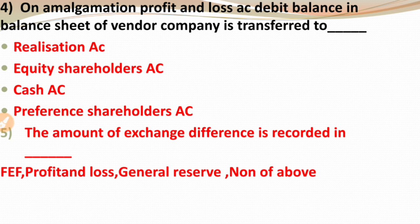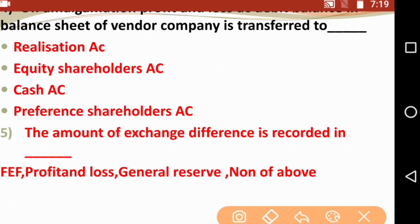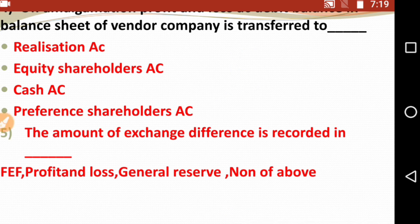Next question: On amalgamation, profit and loss account debit balances in the balance sheet of the vendor company are transferred to — options are Realization, Equity Shareholders Account, Cash Account, or Preference Shareholders Account. Remember, all fictitious assets of the old company — including profit and loss debit balance — are transferred to the Equity Shareholders Account. The right answer is Equity Shareholders Account.